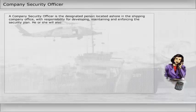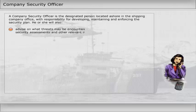A company security officer is the designated person located ashore in the shipping company office, with responsibility for developing, maintaining and enforcing the security plan. He or she will also advise on what threats may be encountered by the ship, using appropriate security assessments and other relevant information.